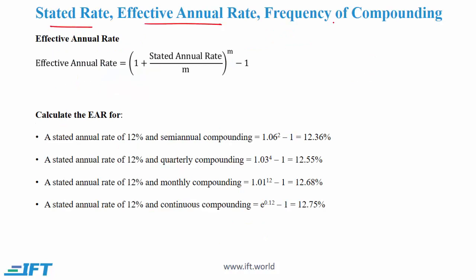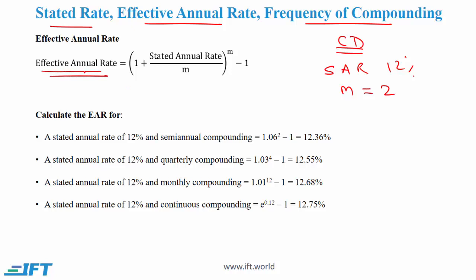Stated rate, effective annual rate, and frequency of compounding. Let's say we have a certificate of deposit where the stated annual rate is 12% and the frequency of compounding is 2. So generally in this formula the frequency of compounding is denoted by M. This means that interest will be calculated 2 times a year — in other words, every 6 months. To calculate the effective annual rate, this is the rate that we are effectively getting over a one-year period.